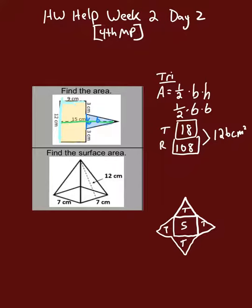Let's start with the square. It's just length times width, so 7 times 7. So the square base is 49 square centimeters.